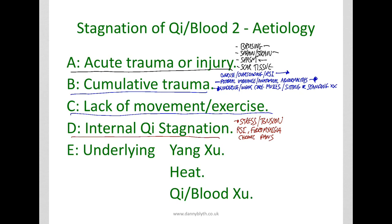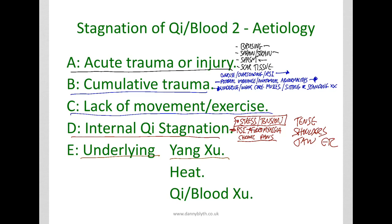Internal qi stagnation — this is the stress and tension. You can see this as a factor in things like RSI and fibromyalgia, and with a lot of chronic pains this can be another factor. You can also see this in tension headaches, tense shoulders, tense jaw — those typical qi stagnation symptoms. There might also be an underlying deficiency: yang deficiency, and pain tends to become worse with age as the yang gets more deficient and qi gets more stagnant. Heat can lead to stagnation, and qi and blood deficiency — if there's not enough qi and blood in the system then it can lead to stagnation.